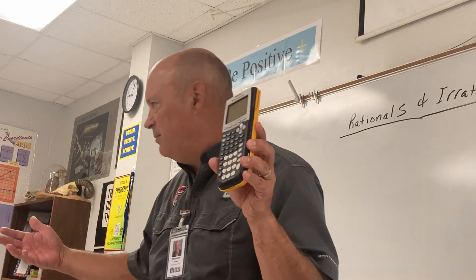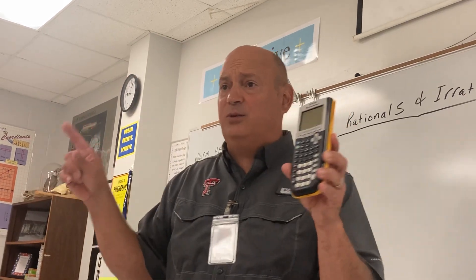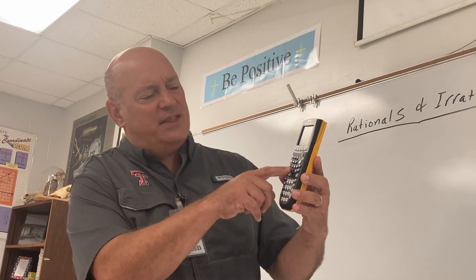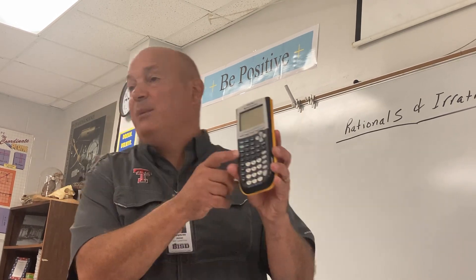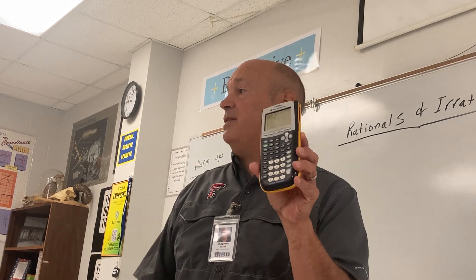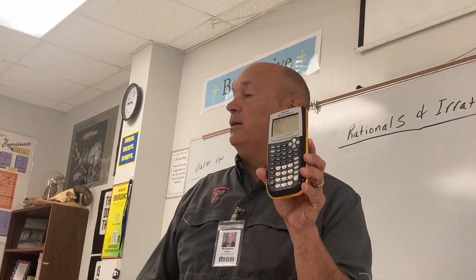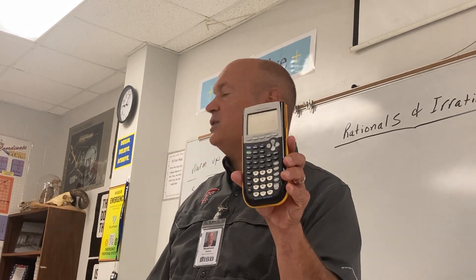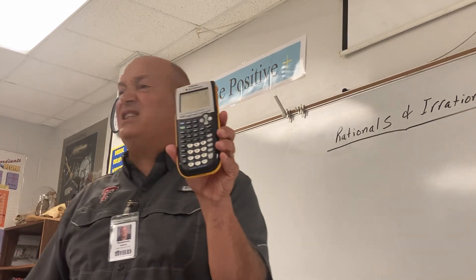We want the fraction to be reduced. Here's where you go: everybody find the button with MATH on it — it's right below the green one. Hit MATH, and the very first option is 'reduce fraction.' Hit enter, and hit enter one more time. What does that fraction reduce to? Two over seven.